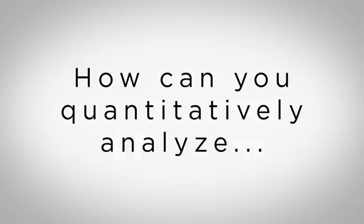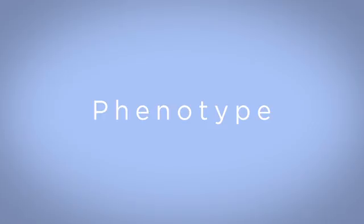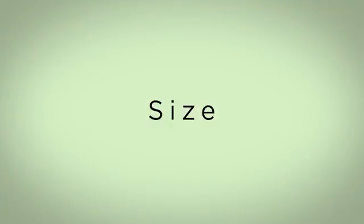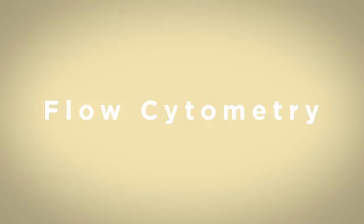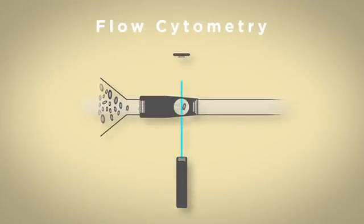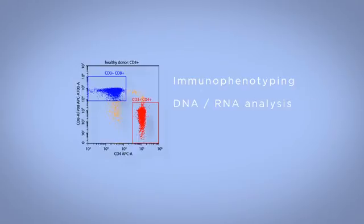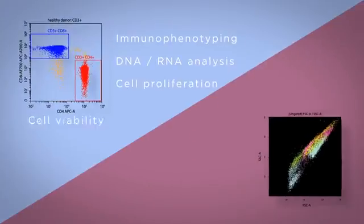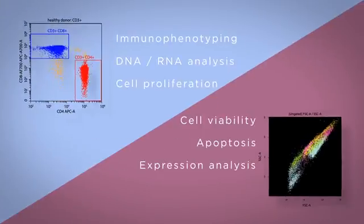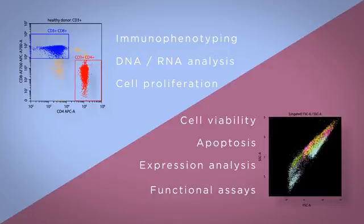How can you quantitatively analyze cell complexity, phenotype, health, and size with flow cytometry? It is a technology that measures and analyzes multiple characteristics of cells as they pass through a beam of laser light. It can be used for immunophenotyping, DNA/RNA analysis, cell proliferation, viability and apoptosis assays, as well as expression analysis and functional assays.